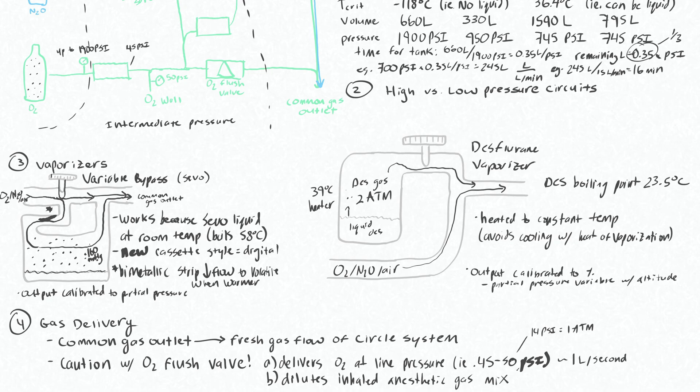The second issue with this is that it dilutes your inhaled anesthetic gas mixture. You spent all of this time precisely titrating your gases through the flow meters to get a certain percentage of oxygen, air, and nitrous, and then getting a certain percentage of volatile from your vaporizer and sending that to your common gas outlet. But when you flush through this O2 flush valve, you're just delivering 100% oxygen. You will no longer be sending a concentration of gas that is an anesthetic to the patient, and that is counterproductive.